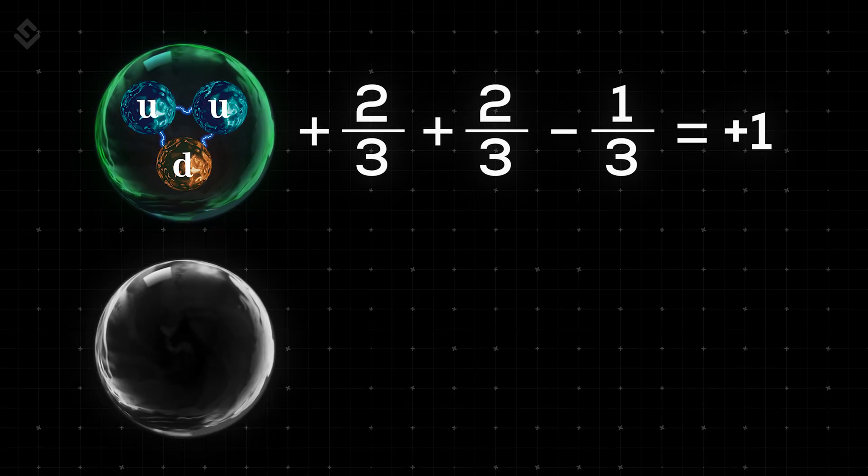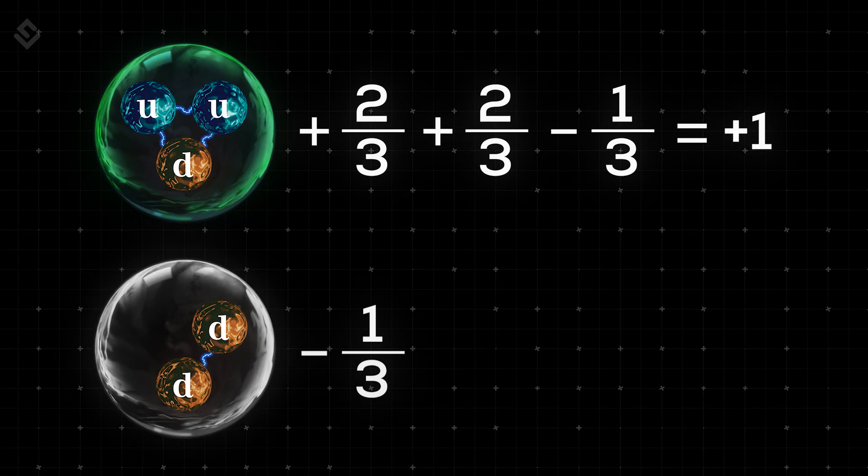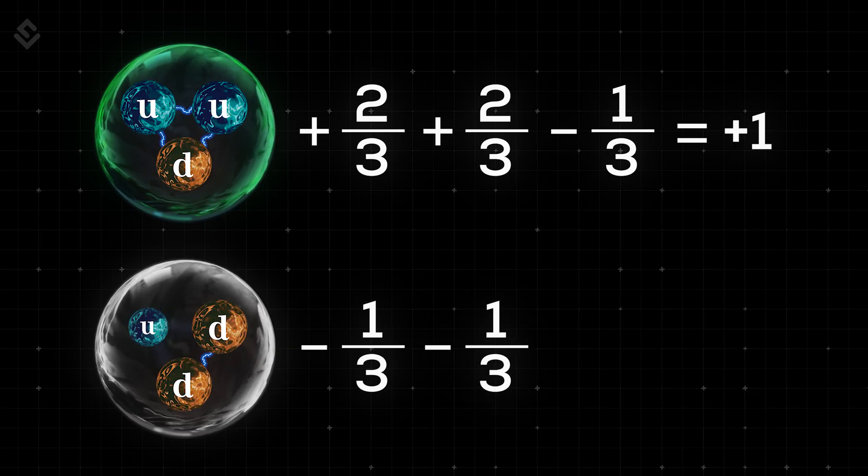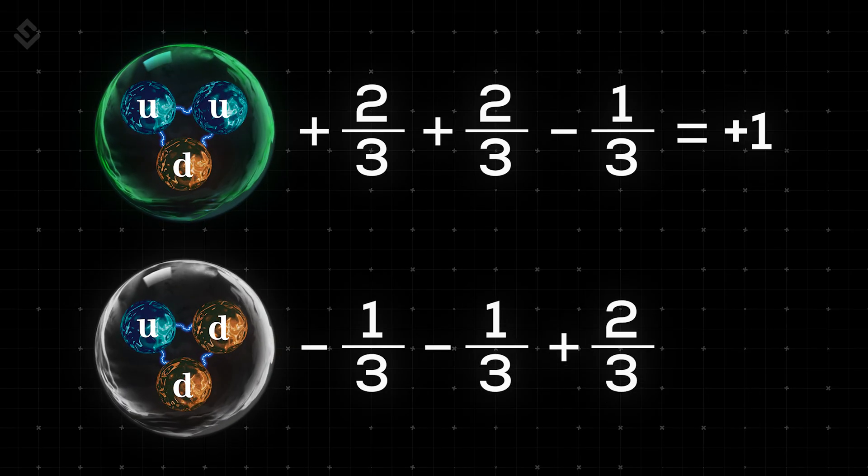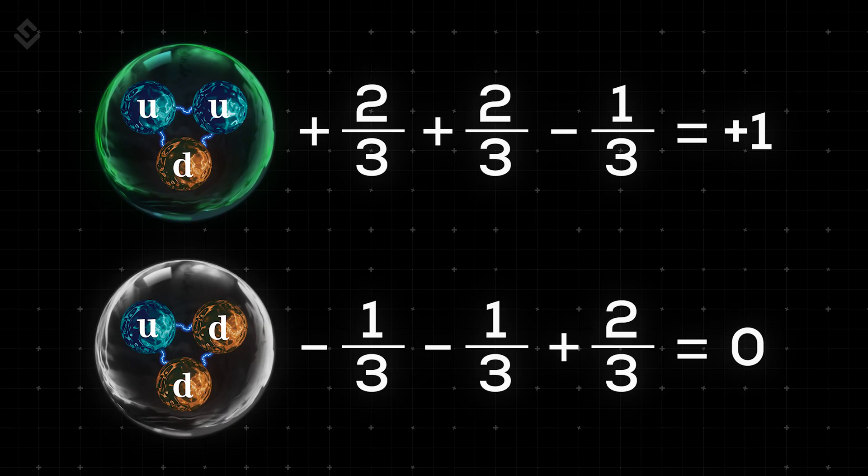And then in a neutron, two down quarks, minus 1/3, minus 1/3, and one up quark, plus 2/3. Sum it up, and the net charge is 0. That is neutral.